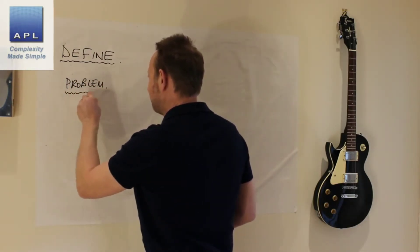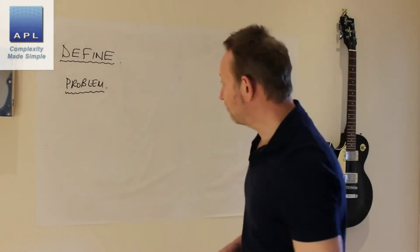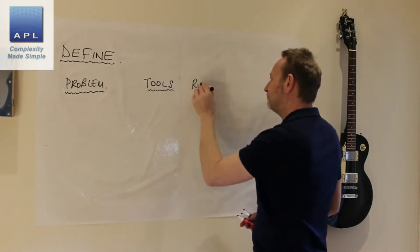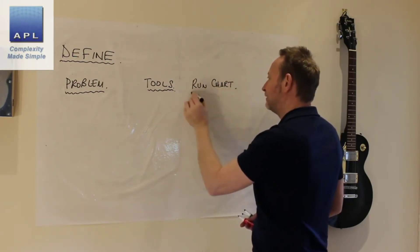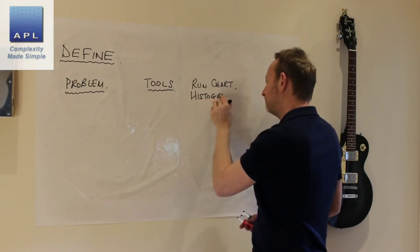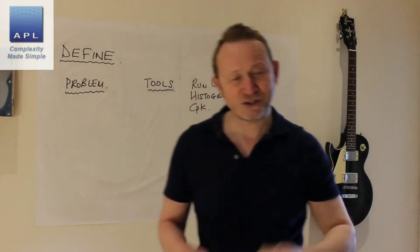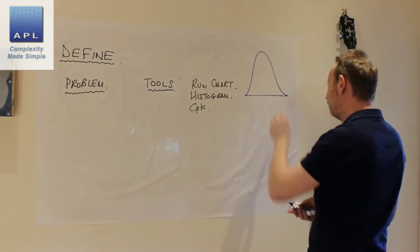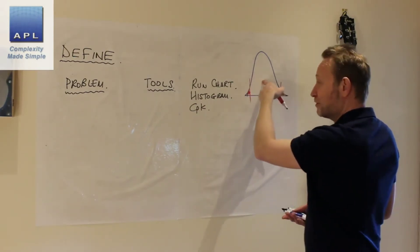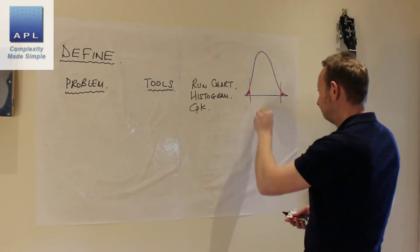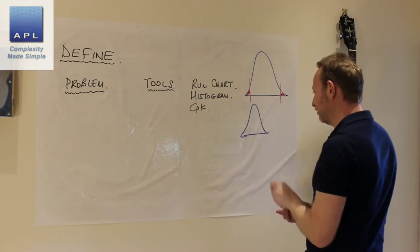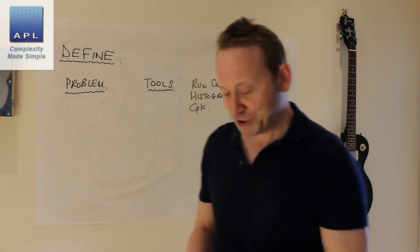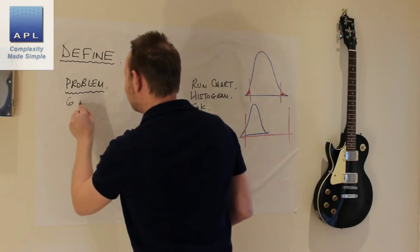Number one, I want you to define your problem. Some basic tools I want you to use: a run chart, a histogram, and Cpk. One of the things we're looking for here is whether what you're trying to get rid of is noise — which is the project you should be doing — or whether the problem is about signal, meaning you're just trying to put the process back on target. Which one of these two have you got?